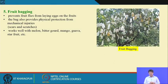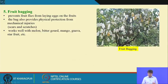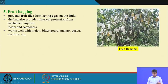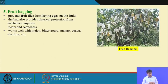Fruit bagging prevents fruit flies from laying eggs on fruits. Perforated, aerated bags are placed over fruits of crops like mango, melon, bitter gourd, guava, star fruit, and banana bunches. Though tedious, this physical method effectively protects fruits from direct pest attack.